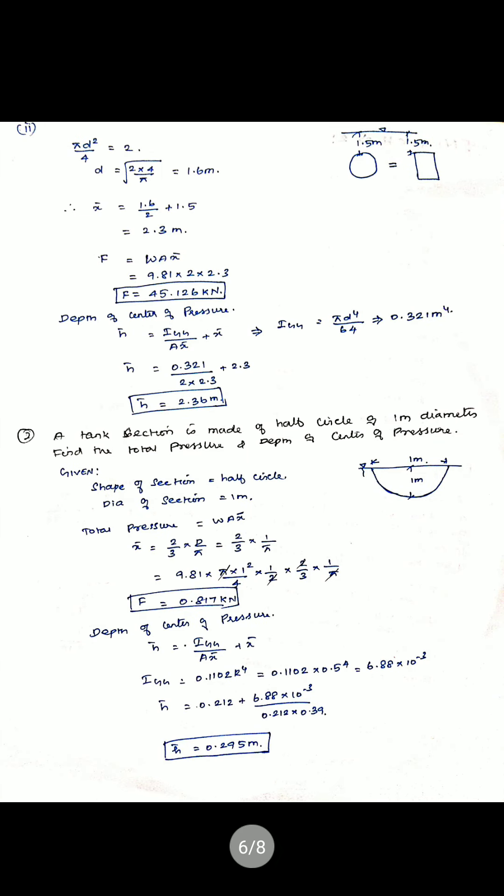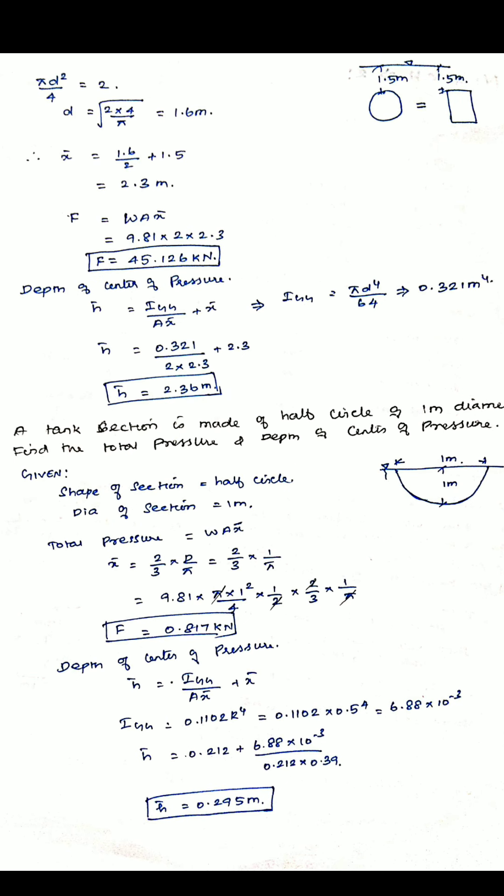For the next problem, similar but with a circular lamina instead of rectangle. To find the diameter: area = 2, so πd²/4 = 2, giving diameter = 1.6 meter. Now x̄ = 1.6/2 + 1.5 = 2.3 meter. Force = w × A × x̄ gives 45.126 kilonewton. Depth of center of pressure: I_GG / (A · x̄) + x̄, where I_GG = πd⁴/64 = 0.321 meter⁴. x̄ = 2.36 meter.